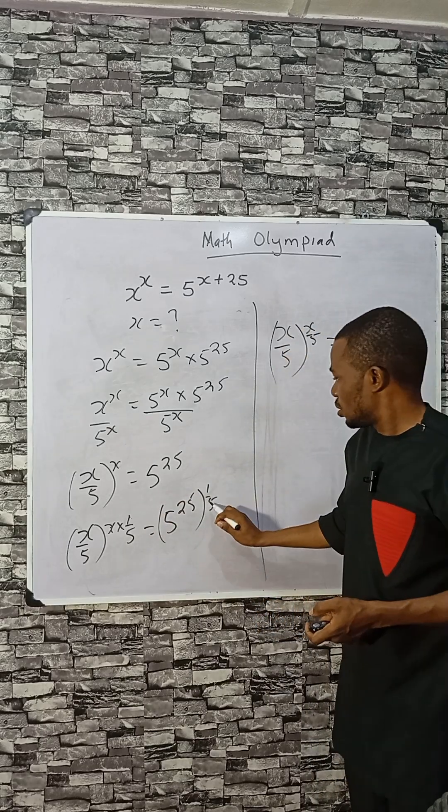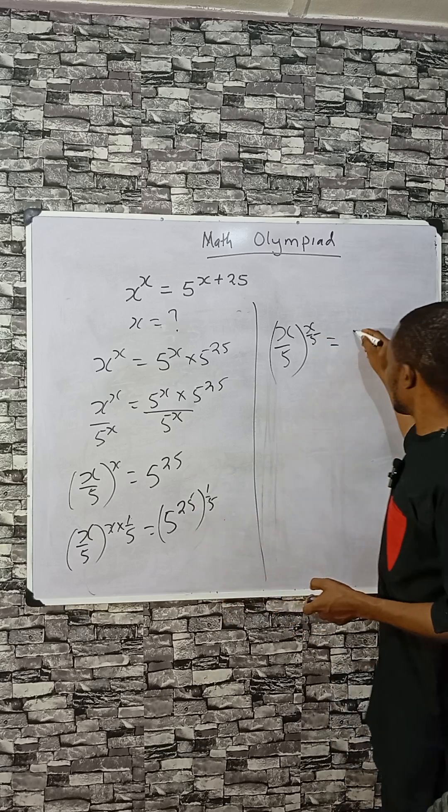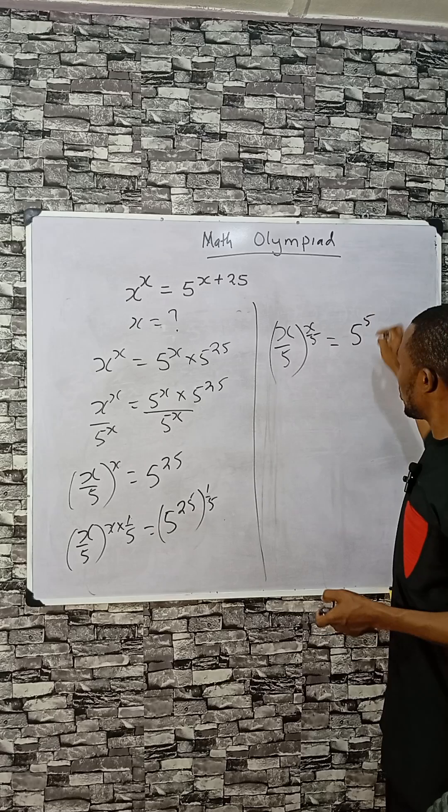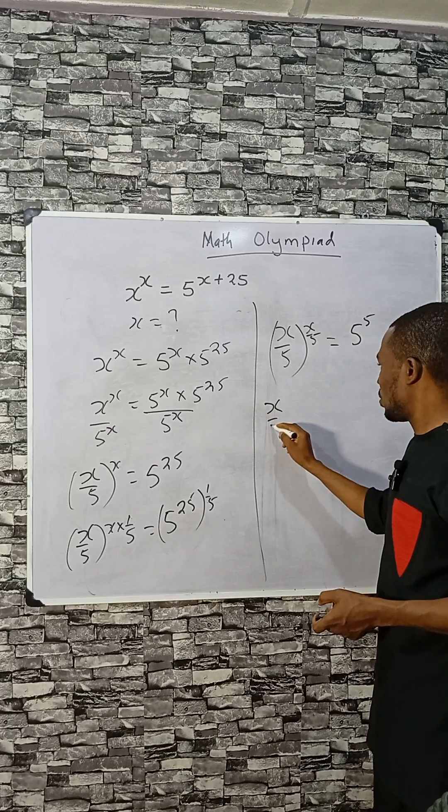Then here this can cancel 1, and here 5, you can have 5 raised to the power of 5. You see both the base and the power are the same, so you can equate any of them.